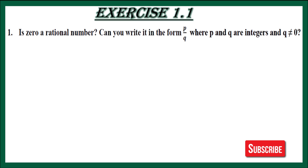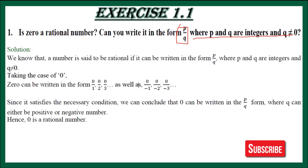Is 0 a rational number? Can you write it in the form P upon Q, where P and Q are integers and Q is not equal to 0? In this question we have to tell whether 0 is a rational number and whether we can write it in P upon Q form. Let's discuss.